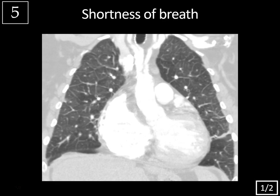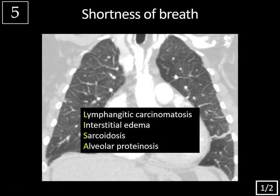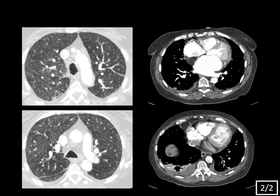What can cause interlobular septal thickening? Remember the mnemonic LISA: lymphangitic carcinomatosis, which tends to be irregular but can also be smooth; interstitial edema, which tends to be smooth; sarcoidosis, which is usually a bit irregular and nodular; and then alveolar proteinosis, or anything else that causes crazy paving. Looking at the axial images, you can see that interlobular septal thickening on lung windows, and also some hazy opacity throughout the lung parenchyma. There again are those interlobular areas of septal thickening.